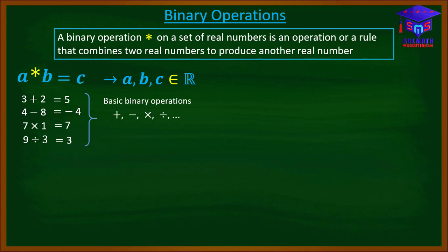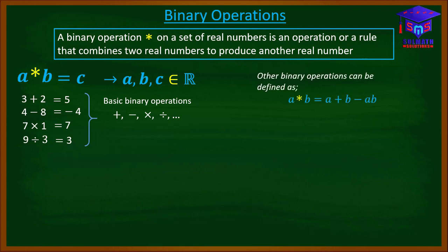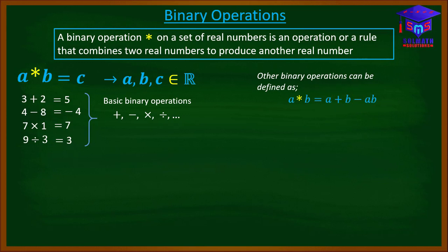These are the basic binary operations. But in the case where we want to perform an operation which involves two or more of these basic binary operations, then we have to use a defined binary operation. Other binary operations can be defined as A star B is equal to A plus B minus AB. In this case, we are combining addition, subtraction, and multiplication, so we have to use a defined operation. We are combining the two real numbers A and B with the operation star, so our binary operation is star.